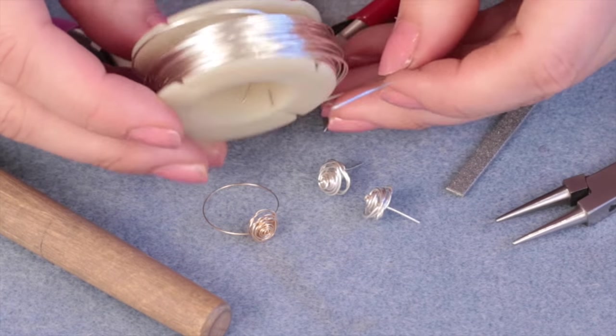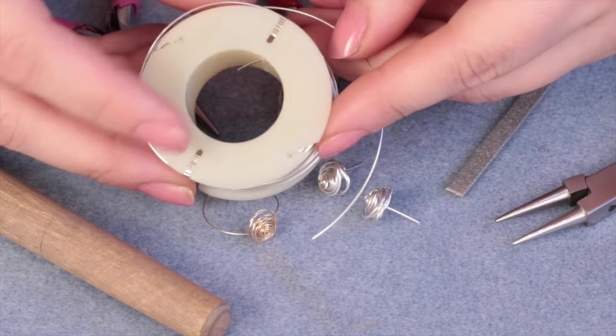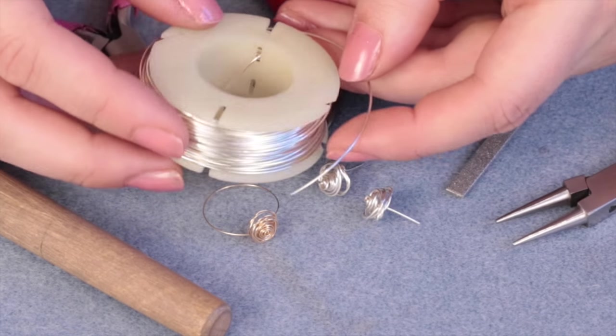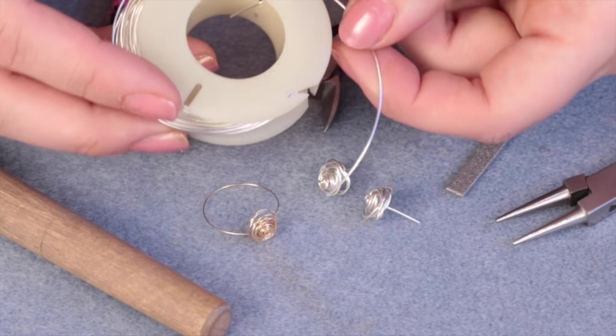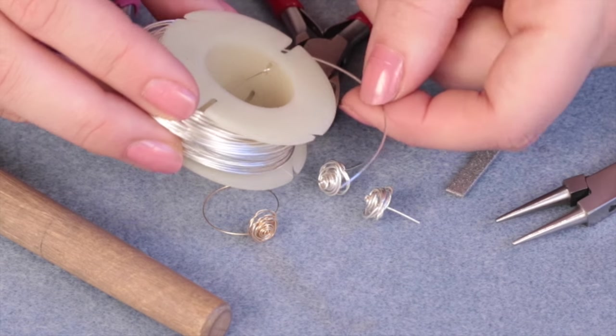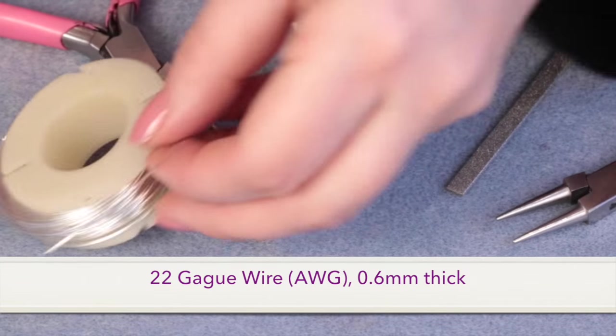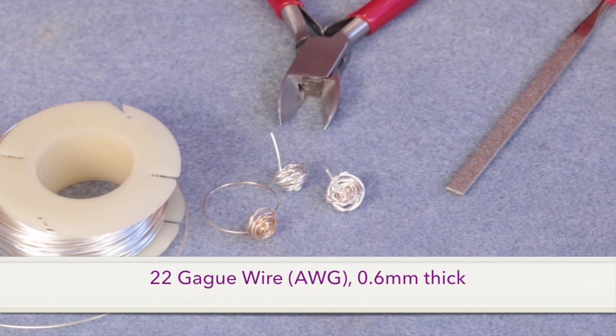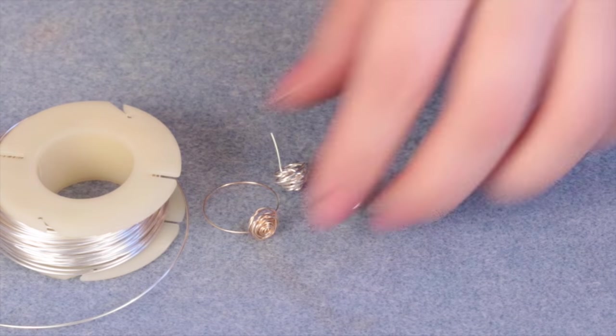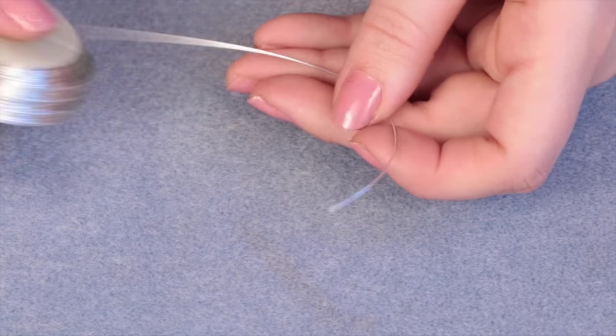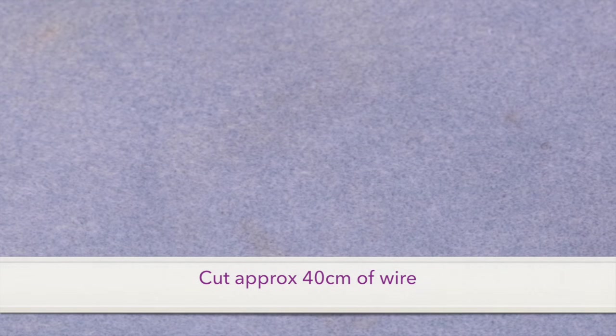Finally I have my wire. I'm using silver wire - you could use silver plated, gold plated, gold filled, any wire you like really. This is 22 gauge which is about 0.6 millimetres.